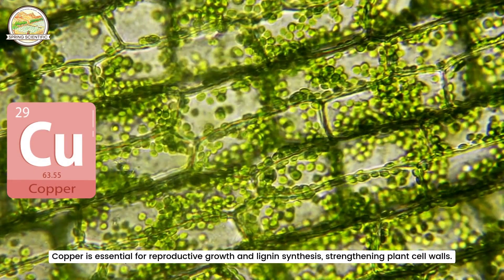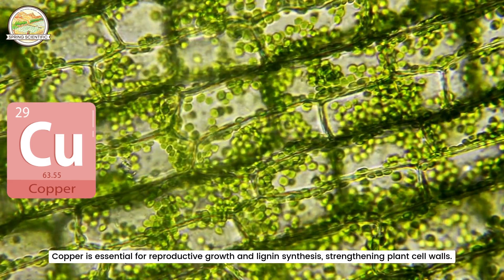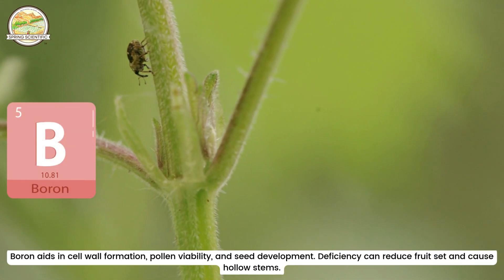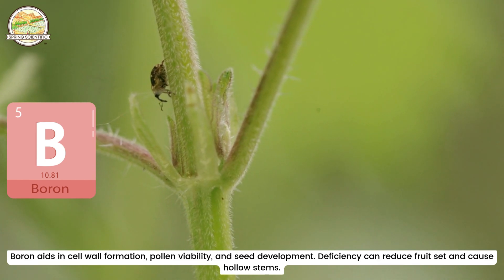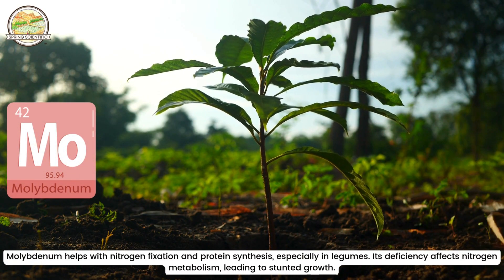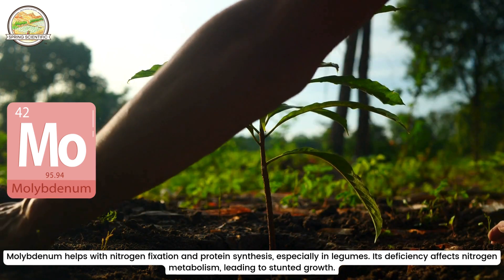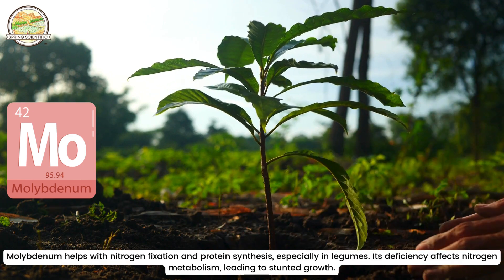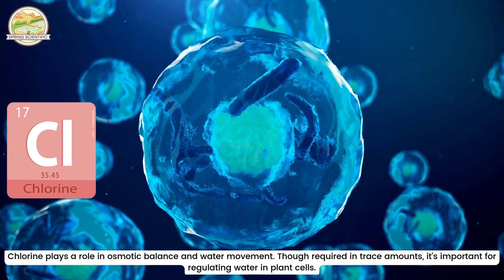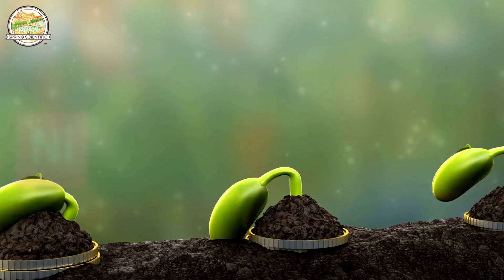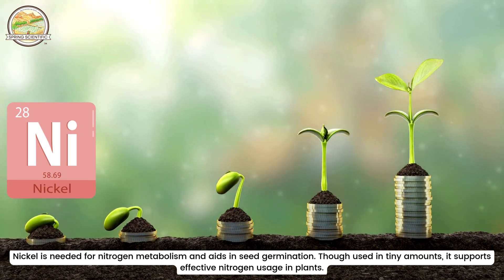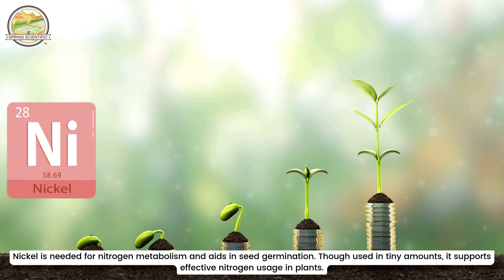Copper (Cu) is essential for reproductive growth and lignin synthesis, strengthening plant cell walls. Boron (B) aids in cell wall formation, pollen viability, and seed development. Deficiency can reduce fruit set and cause hollow stems. Molybdenum (Mo) helps with nitrogen fixation and protein synthesis, especially in legumes. Its deficiency affects nitrogen metabolism, leading to stunted growth. Chlorine (Cl) plays a role in osmotic balance and water movement; though required in trace amounts, it's important for regulating water in plant cells. Nickel (Ni) is needed for nitrogen metabolism and aids in seed germination. Though used in tiny amounts, it supports effective nitrogen usage in plants.